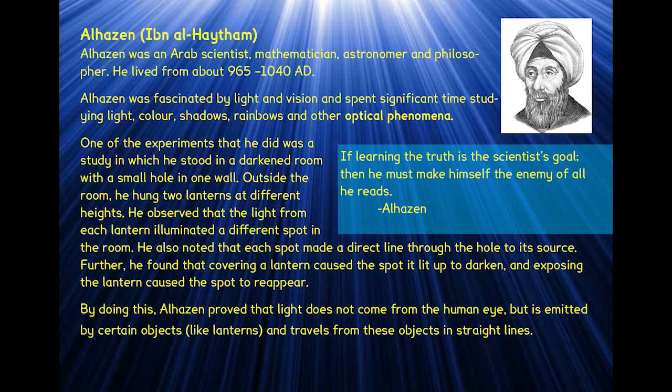Okay so the experiment he did was one in which he stood in a darkened room with a small hole in one wall and outside the room he hung two lanterns at different heights and he observed that the light from each lantern illuminated a different spot in the room and he also noted that each spot made a direct line through the hole to its source. Further he found that covering the lantern caused the spot lit up to darken and exposing the lantern caused the spot to reappear.